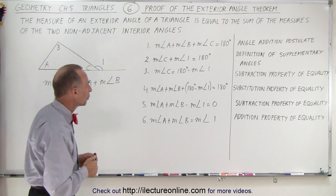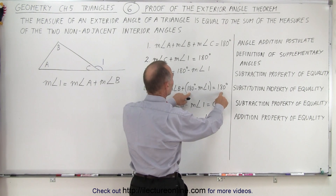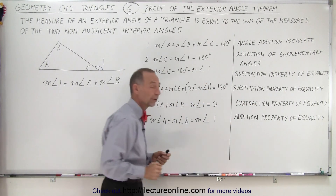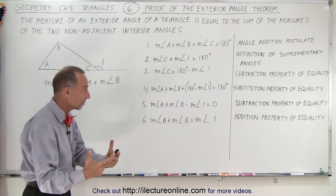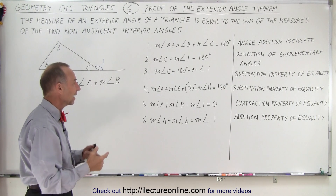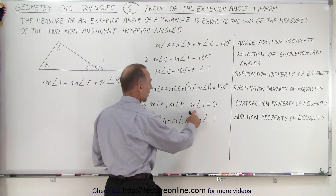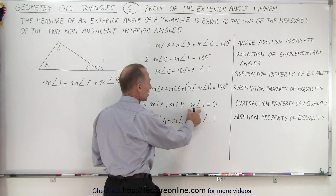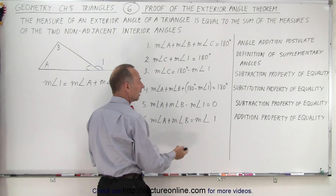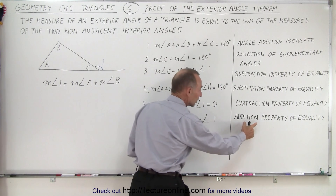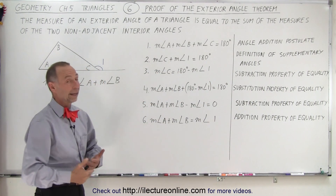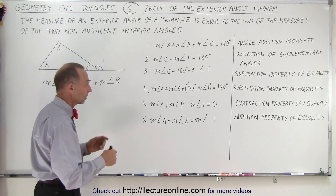The next thing we're going to do is subtract 180 degrees from both sides of the equation. We can do so by the subtraction property of equality — if we subtract the same thing from both sides, nothing has changed. Finally, I'm going to add the measure of angle 1 to both sides. If I add it to the left side, it disappears; if I add it to the right side, I get the measure of angle 1. I can do so because of the addition property of equality — I can add the same thing to both sides and end up with the same equation.